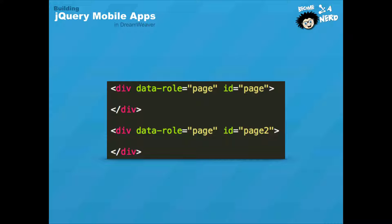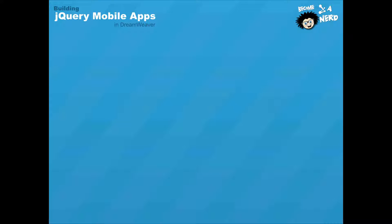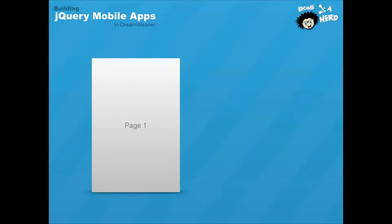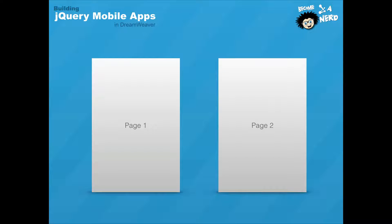You can have additional div tags within a page, but it will all be considered one page. Even though two pages are contained within the same HTML file, only one page displays at a time. So if page 1 is displaying on the user's mobile device, they won't see any content in page 2 until they link from a button or list view to page 2. Once they link to page 2, they will no longer see anything from page 1.